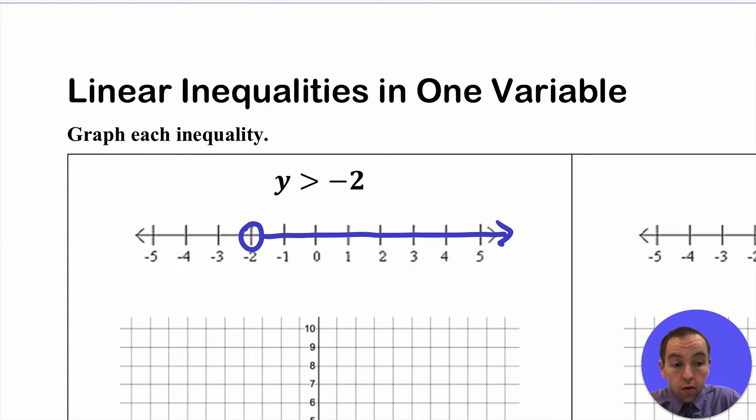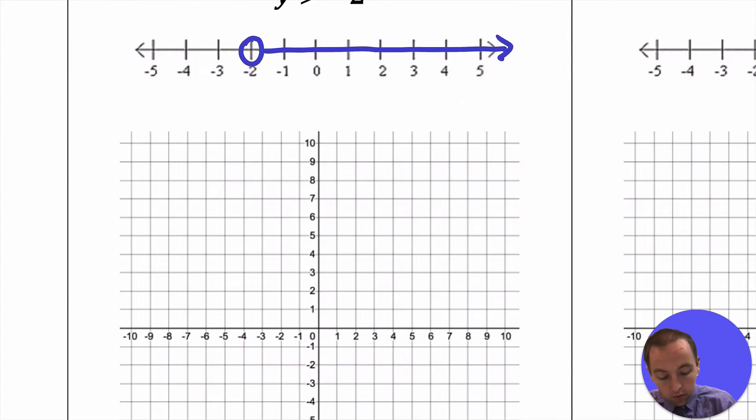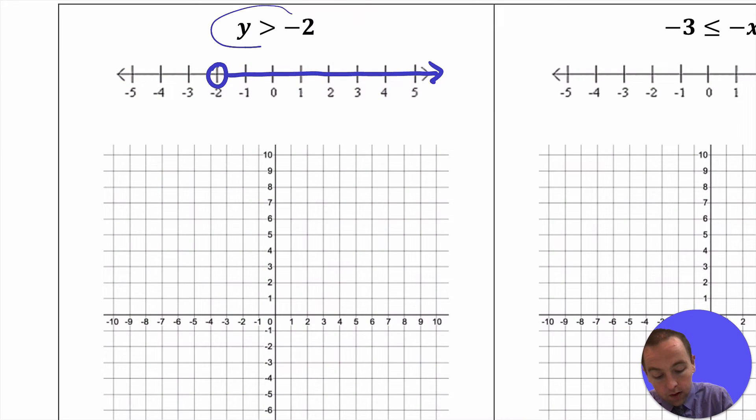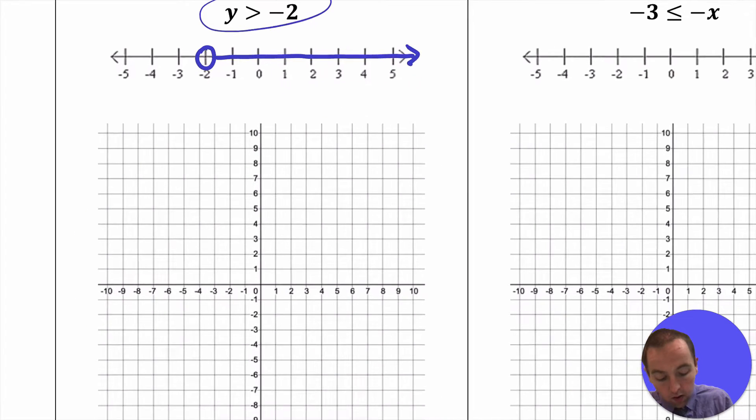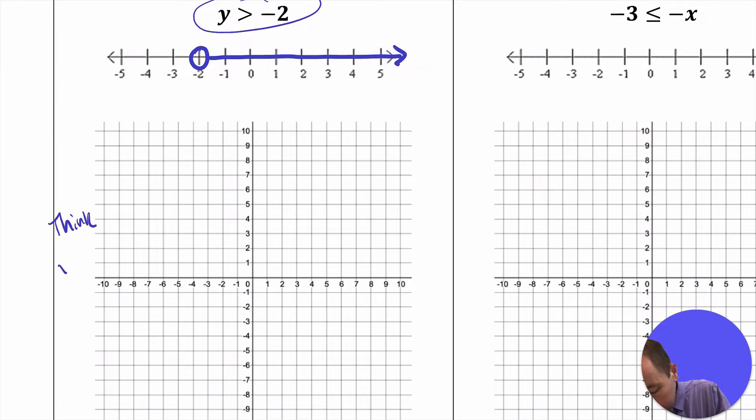Now if you can represent it in one dimension, you can represent it in any other dimensions higher than that. So if I wanted to represent y is greater than negative 2 in, say, two dimensions, you can. You have to just kind of think like y equals negative 2, and that just turns out to be a line, which of course is just a horizontal line. It ends up being this line right here, that would be y equals negative 2.